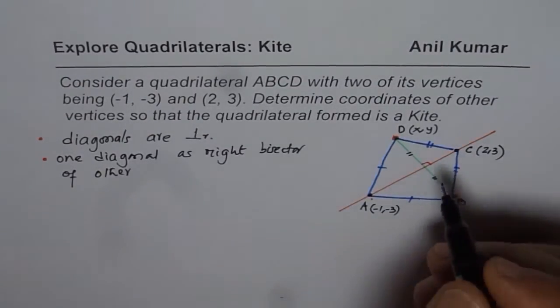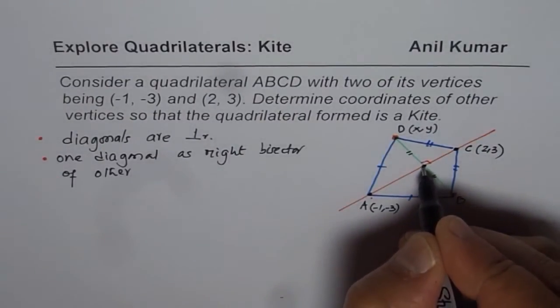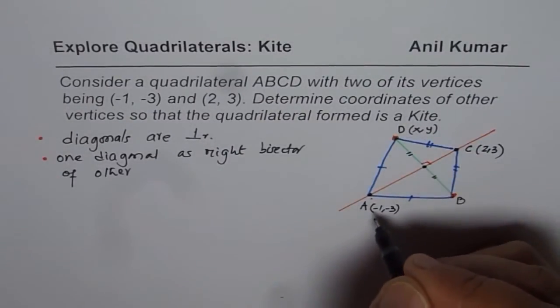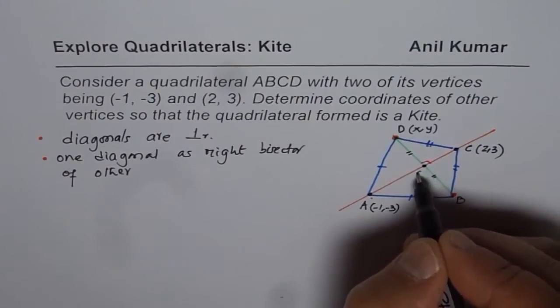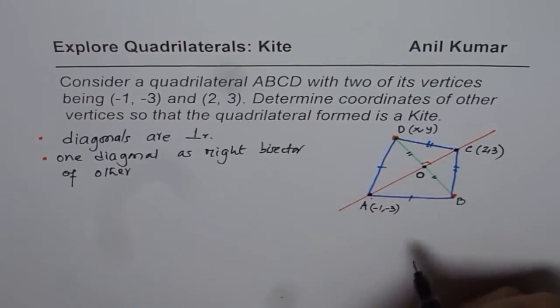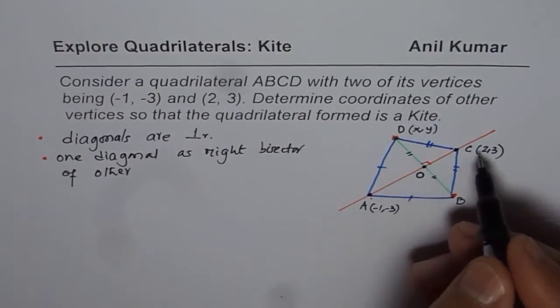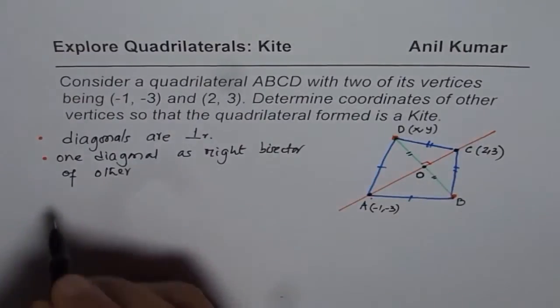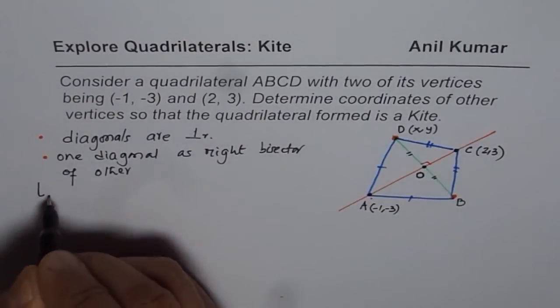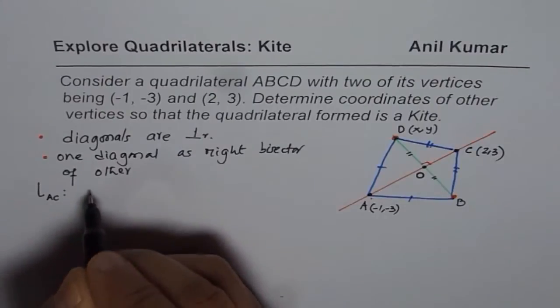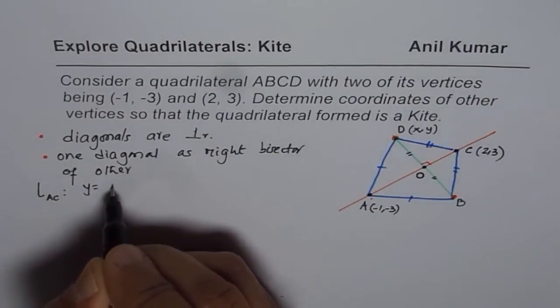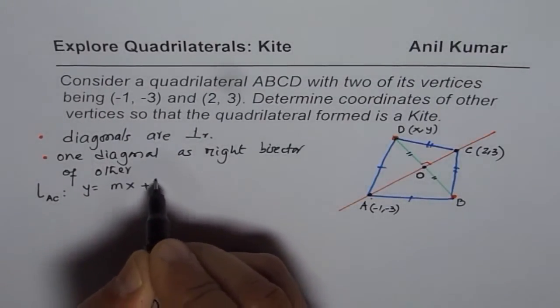Now what we can do here is, we can always have coordinates of a point on the line. So let's try to find coordinates of this point O first. So before that, let's find equation of the line AC. So we'll now work on finding equation of the line AC. And we can start with Y equals to MX plus B.